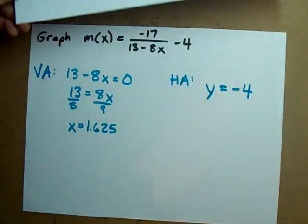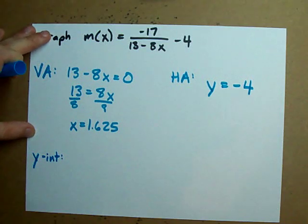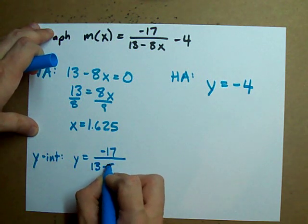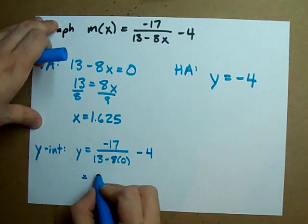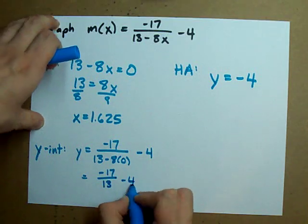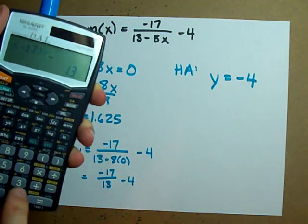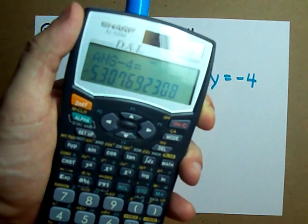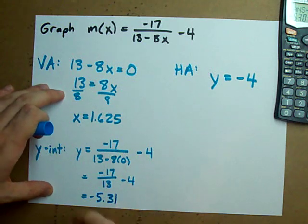Find your y-intercept by setting x equal to zero — something you've done since grade 9. Your y-intercept is y equals negative 17 divided by 13 minus 8 times 0, minus 4. Negative 17 over 13 minus 0 is 13, so you get negative 17 divided by 13, minus 4. On my calculator I get negative 5.31. There's my y-intercept.